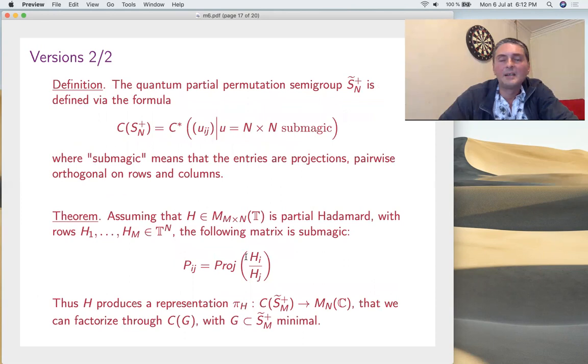The other interesting version is with partial permutations. So this is something I did a few years ago, and this is with Skalski. If you take a partial Hadamard matrix, just a rectangular and also orthogonal, of course you can still consider these things, but it's no longer magic, it's sub-magic. It says that entries are projections and pairwise orthogonal, but the sum is no longer one. This corresponds to quantum partial permutations. If I remove sub here, this definition with magic was exactly the quantum algebra. If you add this sub thing, you're going to partial permutations, which are actually semigroups, and the construction still works. The factorization, everything.